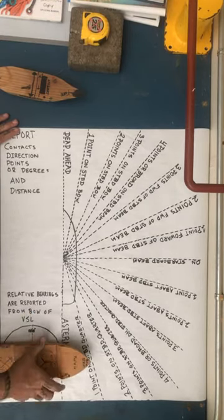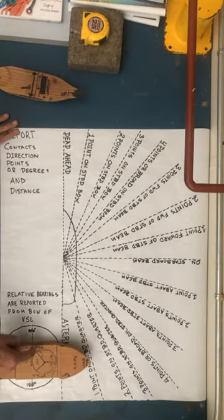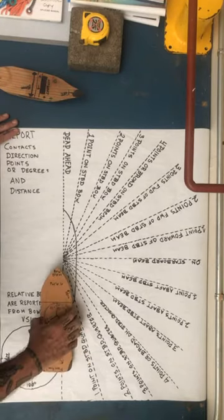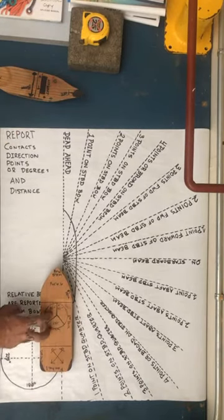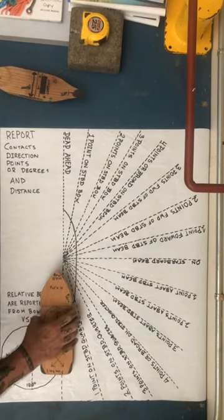So now, if we were headed in this direction and this was 000 and this is 180, 270, 090, now when I turn, this is going to be 000, right? 090, 180, 270. Any way I turn that vessel, the relative bearing applies to on the vessel.